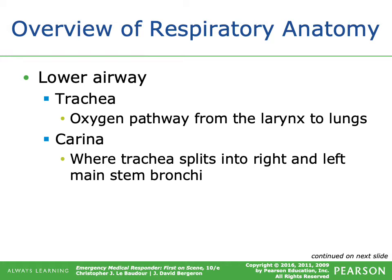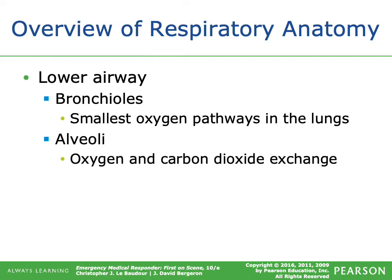The carina is where the trachea splits into the right and left main stem bronchi. Just to clarify — when we say 'oxygen pathway,' we're actually referring to the air you breathe in and out. It's not only oxygen; it's about 21% oxygen and about 79% nitrogen, with some trace gases. The bronchioles are the smallest air pathways into the lungs, and the alveoli are the site of oxygen and carbon dioxide exchange.